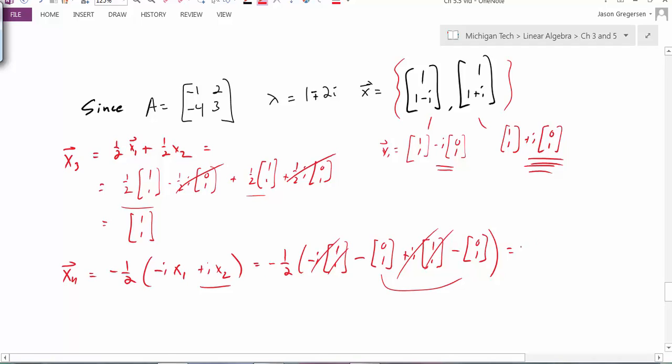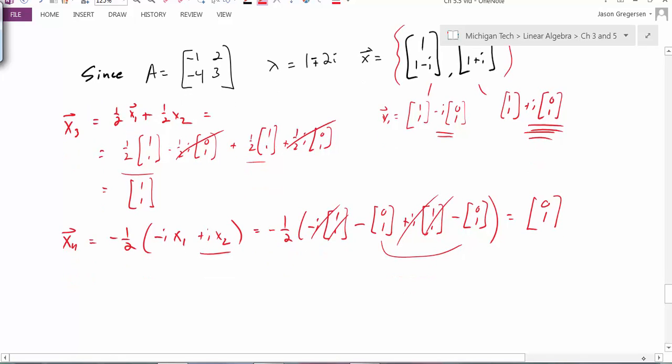When I multiply that by a negative 1 half, the result is positive 0, 1. So when all this is said and done, I've created two new vectors. I now have the vector 1, 1 and the vector 0, 1.